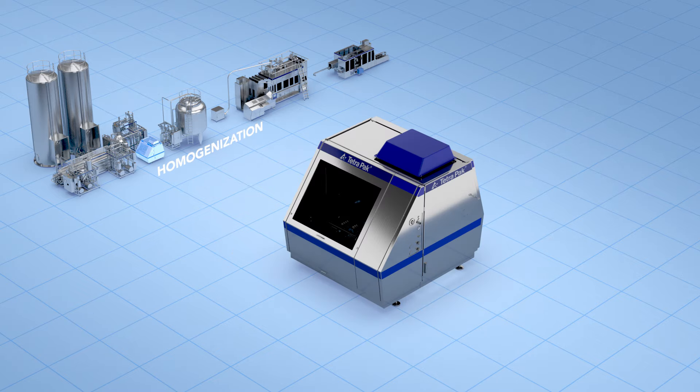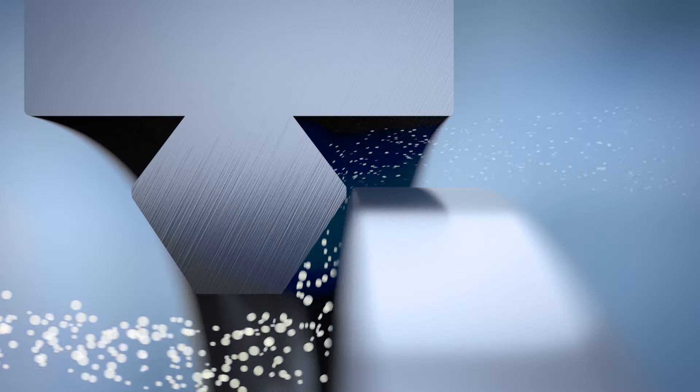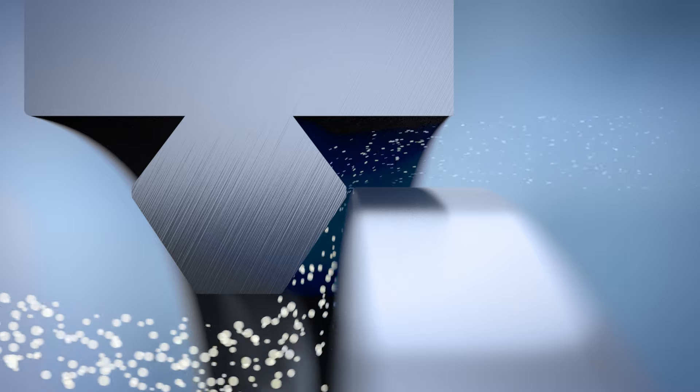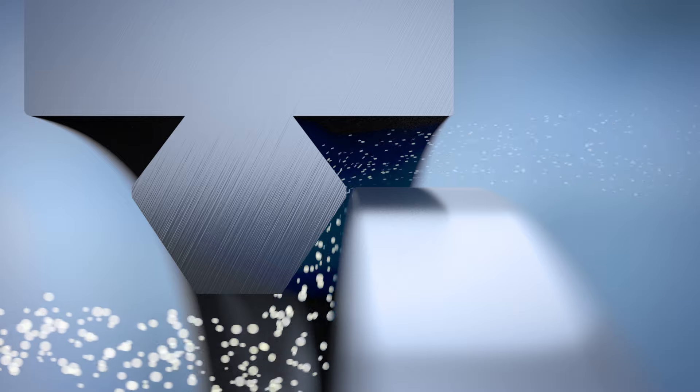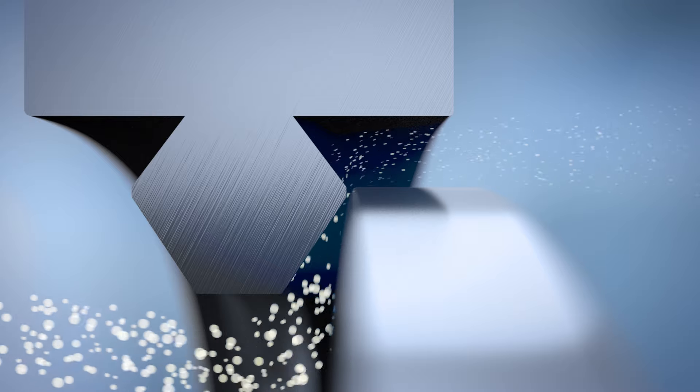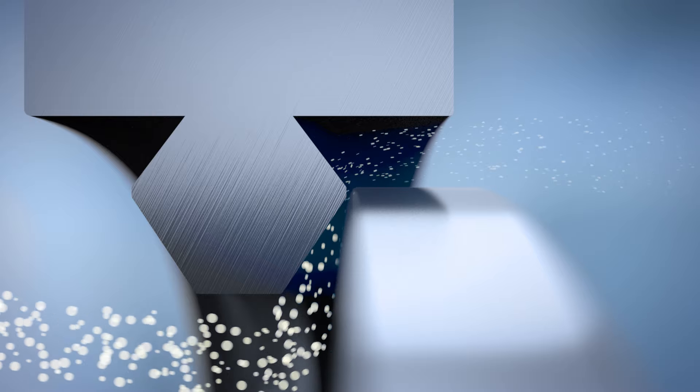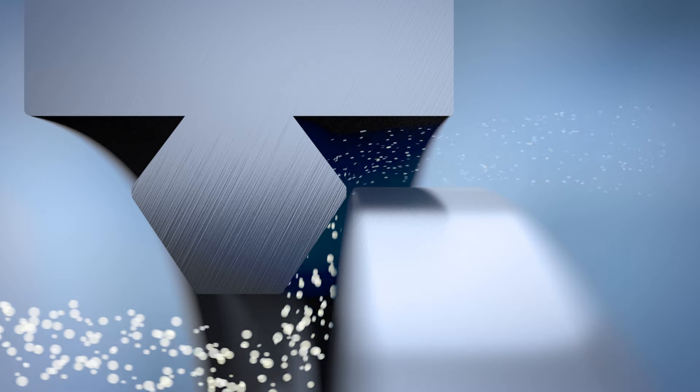Next comes homogenization. Here, the milk passes through a very small gap in a homogenizer, which breaks up the larger fat droplets. Homogenization prevents the fat droplets from rising to the surface and forming a layer of cream in the container.